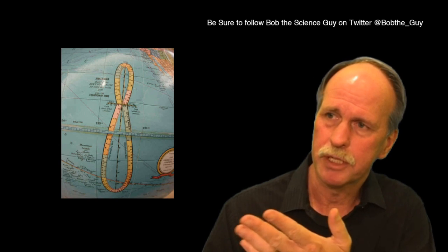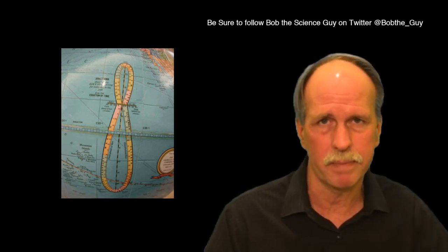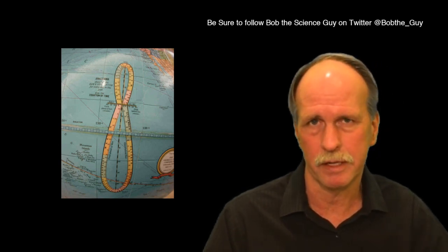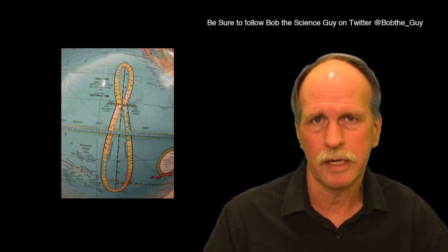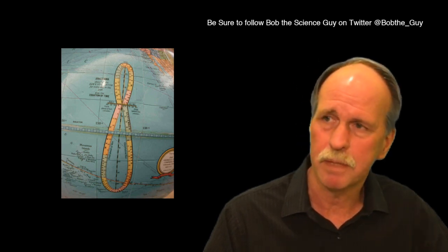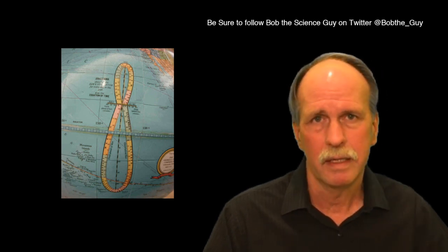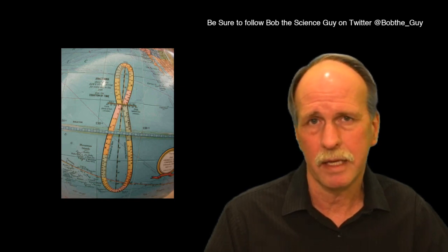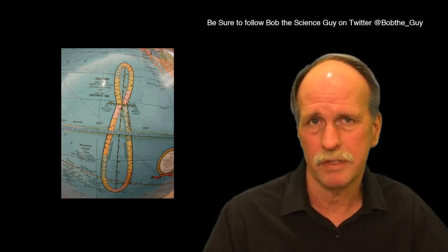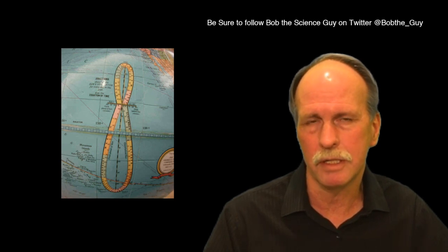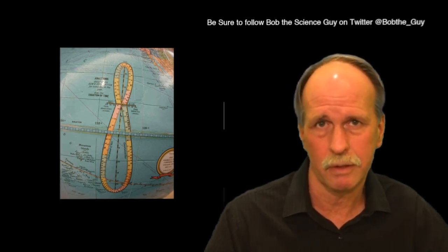Many of us have globes at home that have this figure eight pattern in the eastern Pacific Ocean. This is called a solar analemma and it traces the path of the sun throughout the year. In this episode, we're going to see how the analemma is constructed, we're going to see photographs of it, and we're going to learn how to use it to make predictions on our Earth.